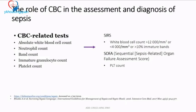In the CBC, the parameters for sepsis assessment include: absolute WBC count — a decrease indicates infection; neutrophil count, since neutrophilia indicates infection; and the band count, which represents cells just before becoming fully segmented neutrophils. In neonates, the band count is a very important indicator of sepsis.